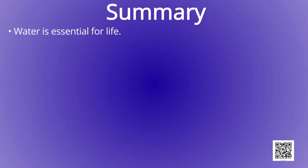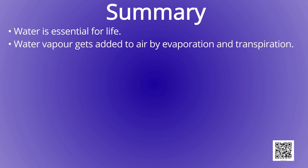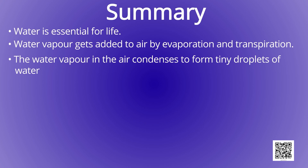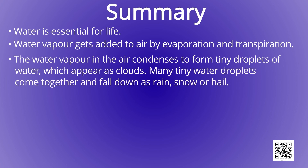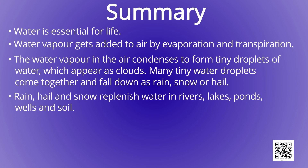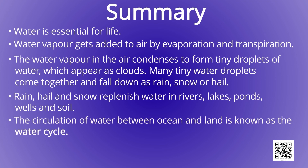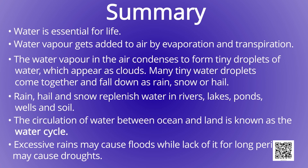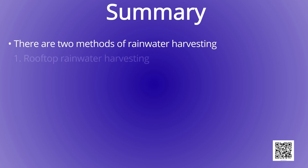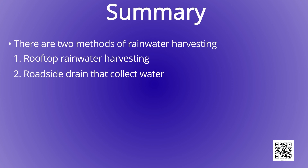Summary: Water is essential for life. Water vapour gets added to air by evaporation and transpiration. The water vapour in the air condenses to form tiny droplets of water which appear as clouds. Many tiny water droplets come together and fall down as rain, snow or hail, replenishing water in rivers, lakes, ponds, wells and soil. The circulation of water between ocean and land is known as the water cycle. Excessive rains may cause floods while lack of rain for long periods may cause droughts. There are two methods of rainwater harvesting: rooftop rainwater harvesting and roadside drains that collect water.